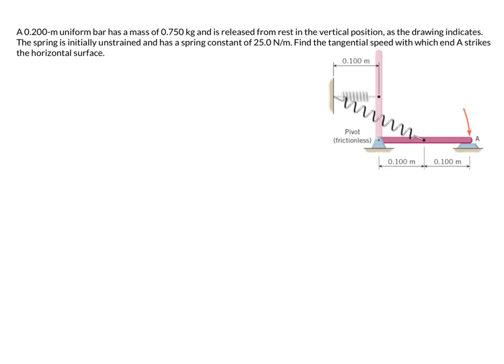Welcome to another sample problem. We have a uniform rod starting in an upright vertical position — position 1 — with a spring attached that is initially unstretched, so the initial rest length of the spring is 0.1 meters. The rod falls and swings down into position 2, and we're asked to find the tangential speed of the end of the rod as it strikes point A.